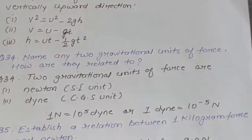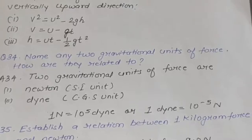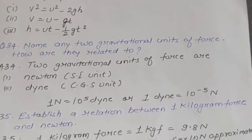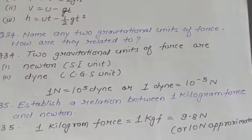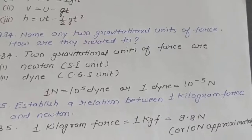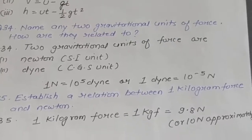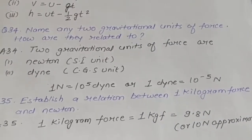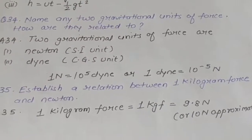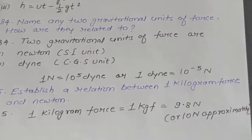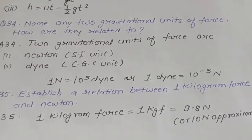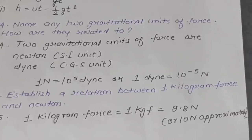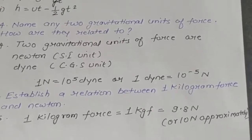Question 34: Name any two gravitational units of force and state how they are related. Answer: Two gravitational units of force are Newton (SI unit) and dyne (CGS unit). The relationship is: 1 Newton = 10⁵ dyne, and 1 dyne = 10⁻⁵ Newton.